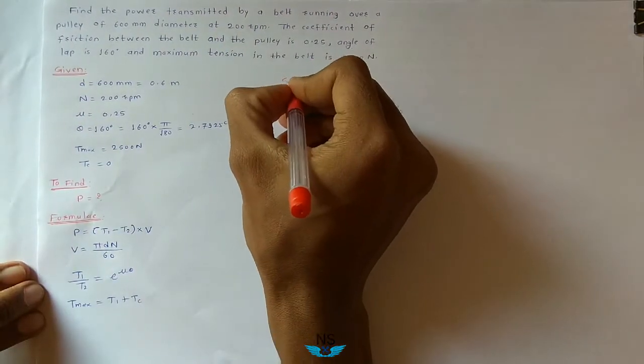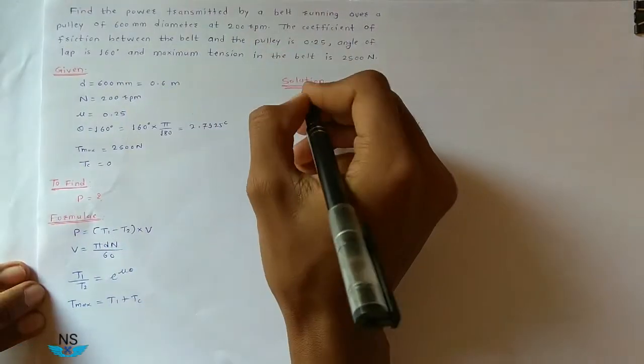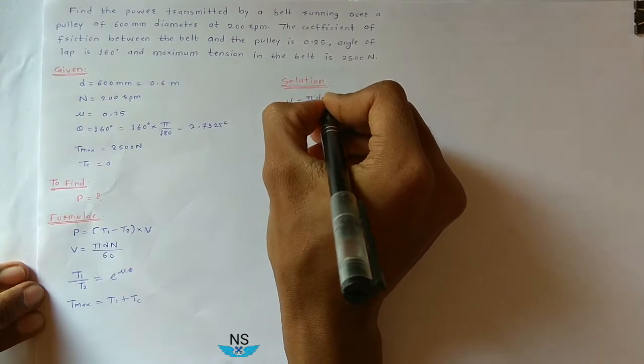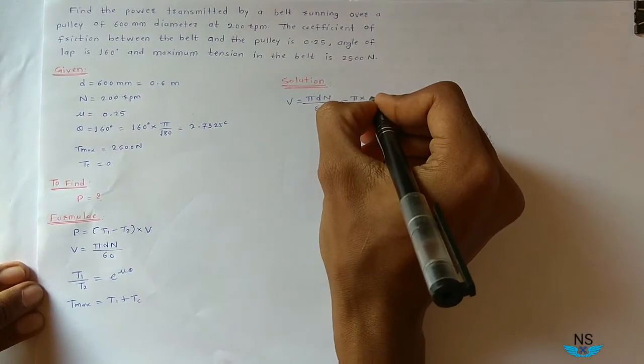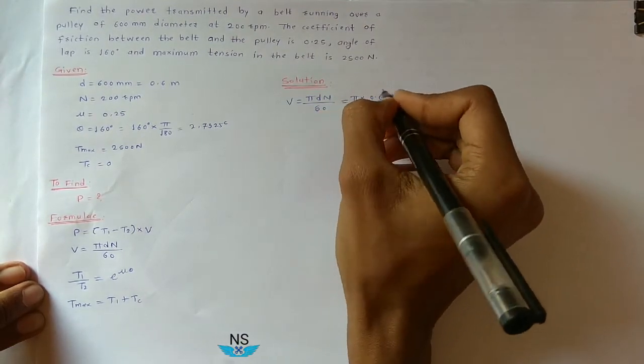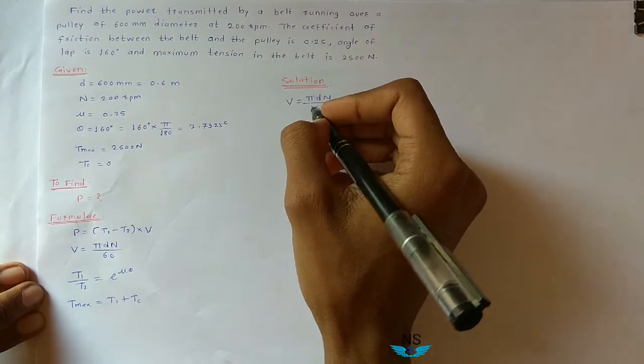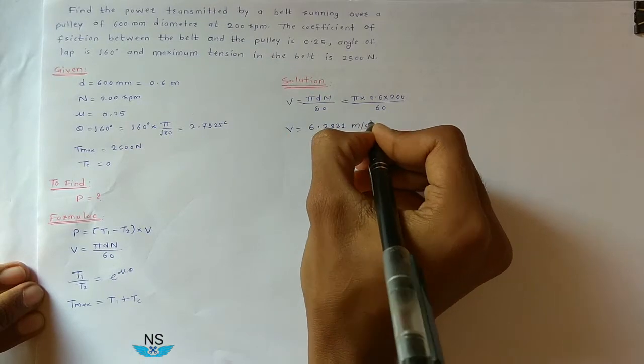Let us start with velocity. V is equal to pi dn divided by 60. That is equal to pi into 0.6 into 200 divided by 60. V is equal to 6.2831 meters per second.